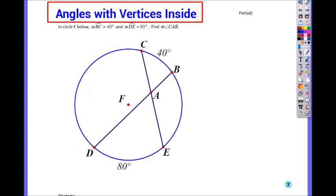How do you find the angles with vertices inside? So we're not talking about the central angle where the center is F here. It's gonna be inside the triangle but, I mean, inside the circle but not at the center.